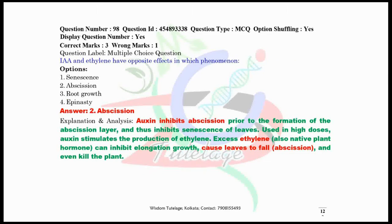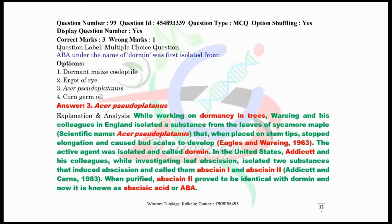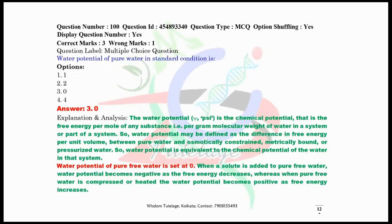Question number 98, IAA or indole acetic acid and ethylene have opposite effects in which phenomenon? The correct answer is abscission. Auxin inhibits the abscission and ethylene promotes the abscission. Now question number 99, ABA under the name of Dormin was first isolated from Acer pseudoplatanus, option number 3. Now question number 100, water potential of pure water in standard condition is obviously zero. So this is all about episode 5.